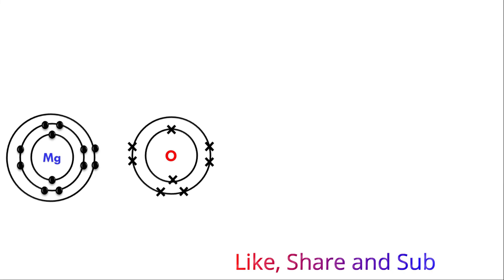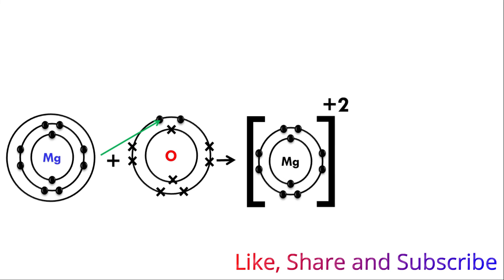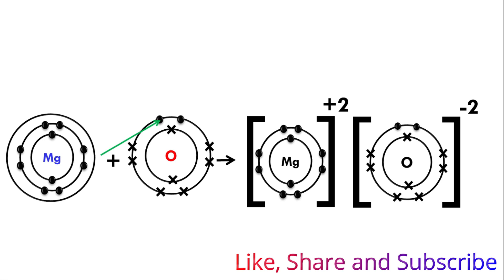Oxygen needs 2 electrons to complete its outer shell. Magnesium will donate its 2 electrons to oxygen. This way both their outer shell octets will be complete. Magnesium donated 2 electrons so it will have a plus 2 charge. Oxygen accepted 2 electrons so it will have a minus 2 charge.